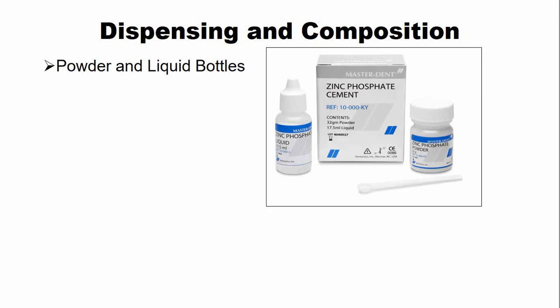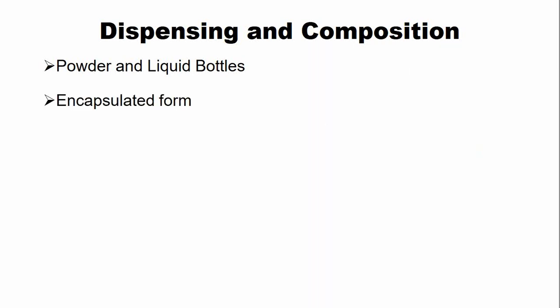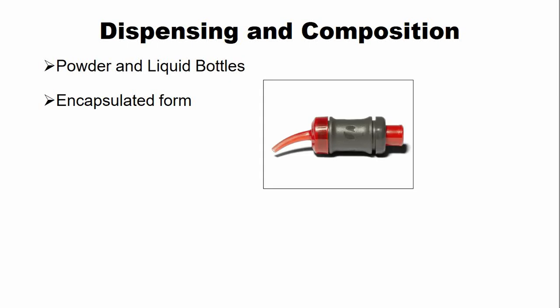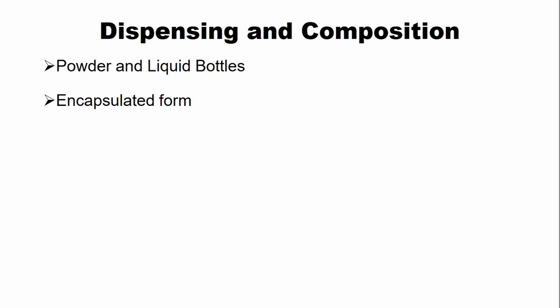Dispensing refers to the forms in which the cement is available. The cement is available in two forms: the most common form is powder and liquid bottles. Besides this, zinc phosphate cement is also available in capsules, where the liquid and powder are pre-proportioned, mechanically mixed, and extruded with the help of a special gun.